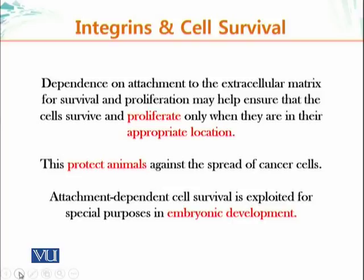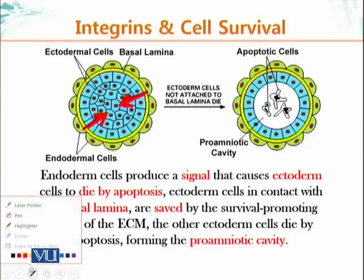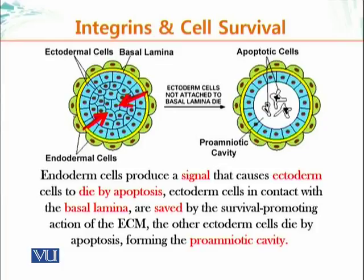Attachment-dependent cell survival is greatly exploited during embryonic development. Here we have an embryonic tissue with ectodermal cells. There are two different types of cells: the endodermal cells on the outside and the blue ectodermal cells. At a certain stage, a cavity needs to be generated, so the endodermal cells release a substance that results in the death of the ectodermal cells present in the center.